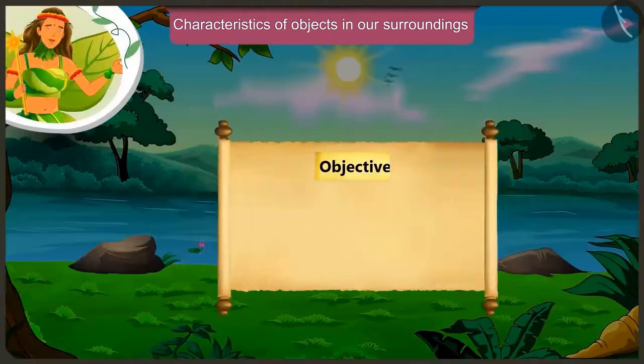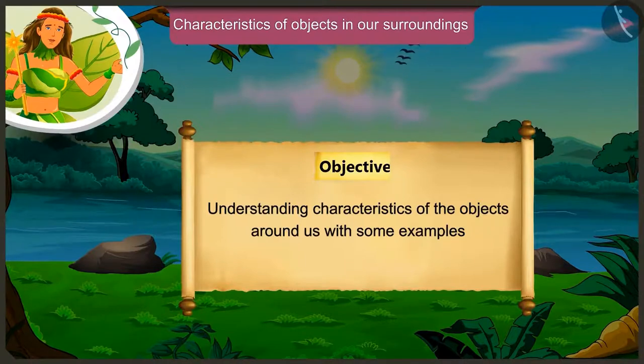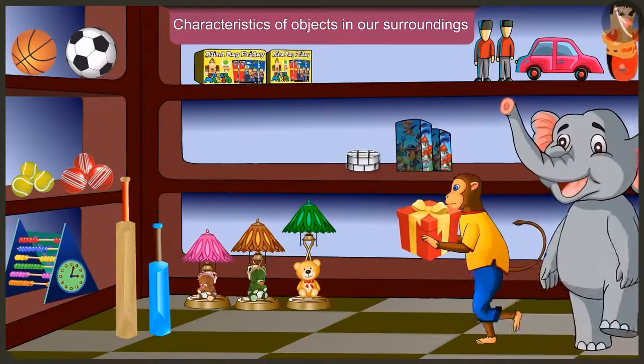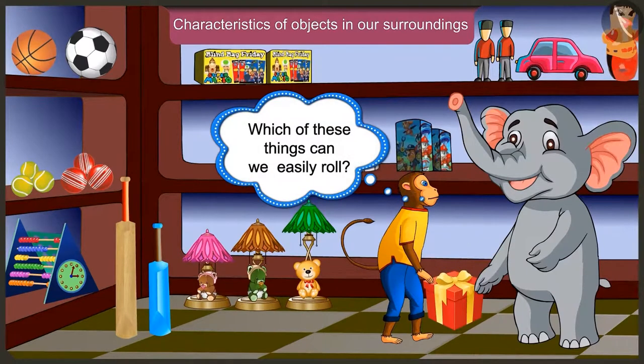Today we will understand the characteristics of objects around us with some examples. Which are the things here which can be easily rolled?